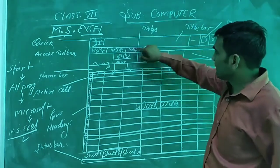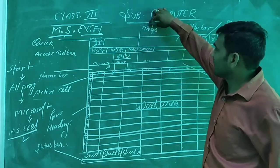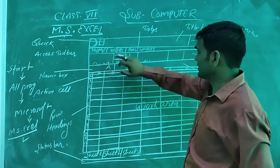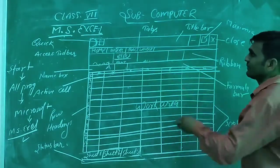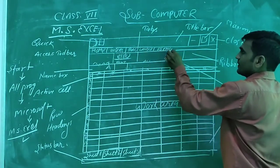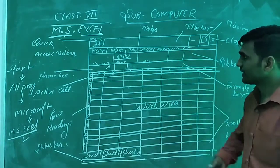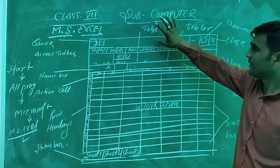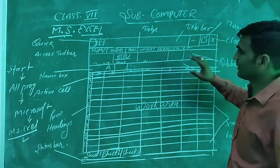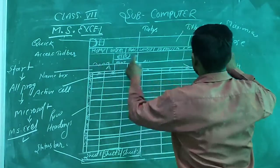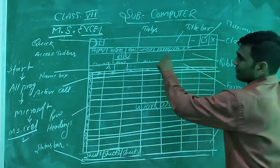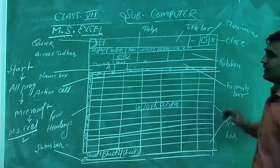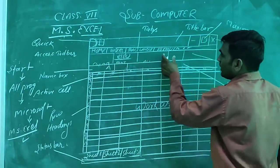Below the title bar there is one bar and that is the tab bar. In the tab bar there are many tabs available. Below the tab bar, this section is called the ribbon, and the ribbon is divided into small groups.